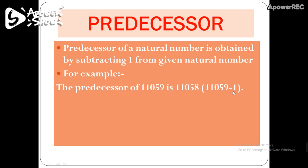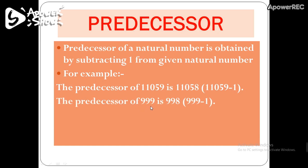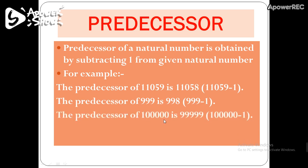In case of predecessor you subtract 1, whereas in case of successor you add 1 to the given natural number. Similarly, the predecessor of 999 is 998, obtained by subtracting 1 from 999. In this way, you can get the predecessor of any natural number.